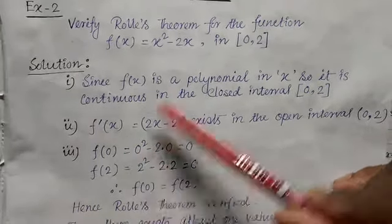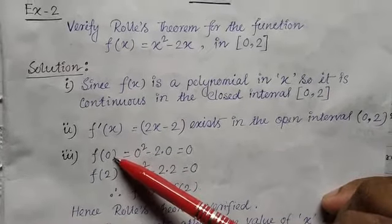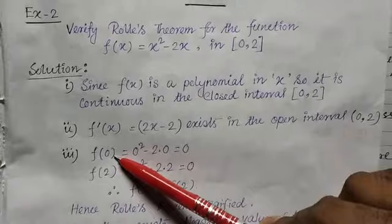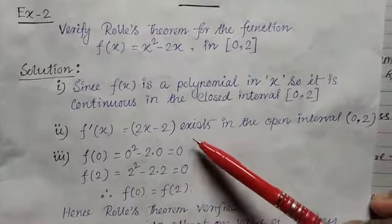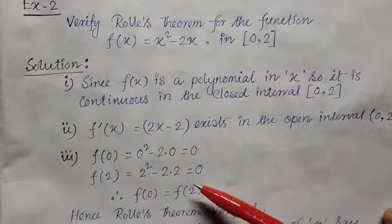Third condition: you have to find f(a) and f(b). f(a) means 0, b means 2. So first you find f(0). Similarly put x = 0 in f(x), so it is coming 0. f(2) is coming 0. So that means f(0) = f(2).